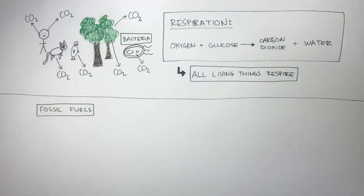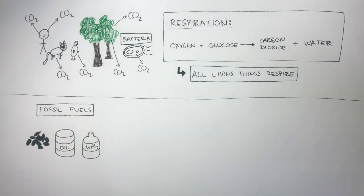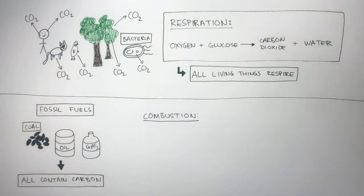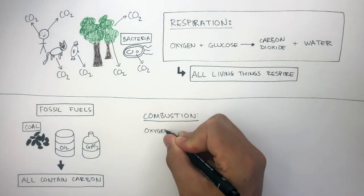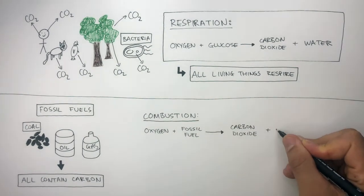Fossil fuels are also responsible for releasing carbon dioxide into Earth's atmosphere. Coal, oil, and natural gas are all fossil fuels. They all contain carbon. The combustion of these fossil fuels is what releases carbon dioxide into Earth's atmosphere. This is a chemical reaction where oxygen reacts with fossil fuels to produce carbon dioxide and water.